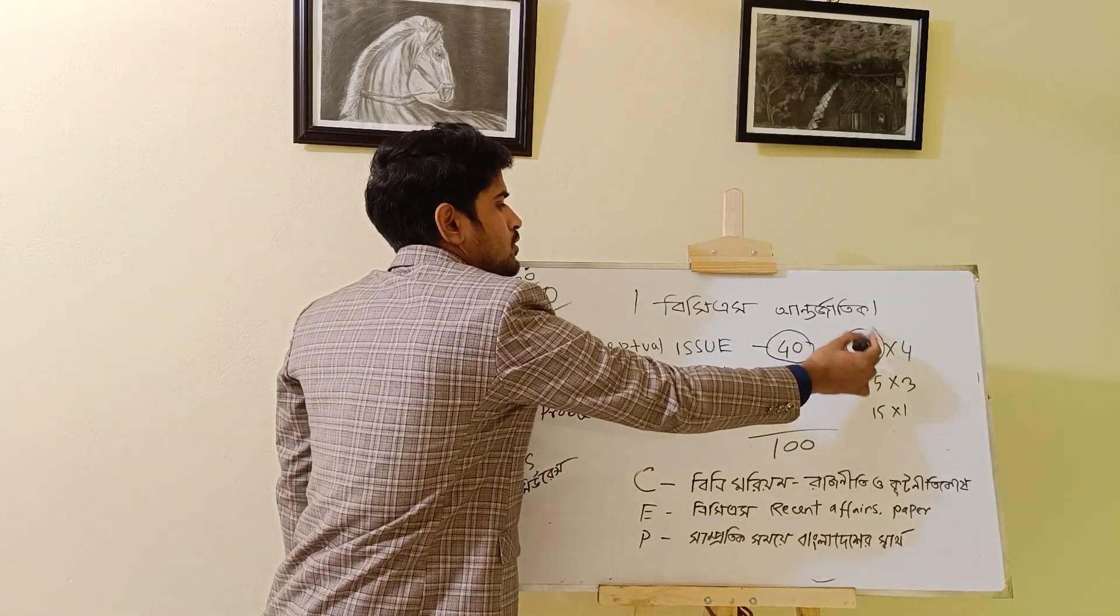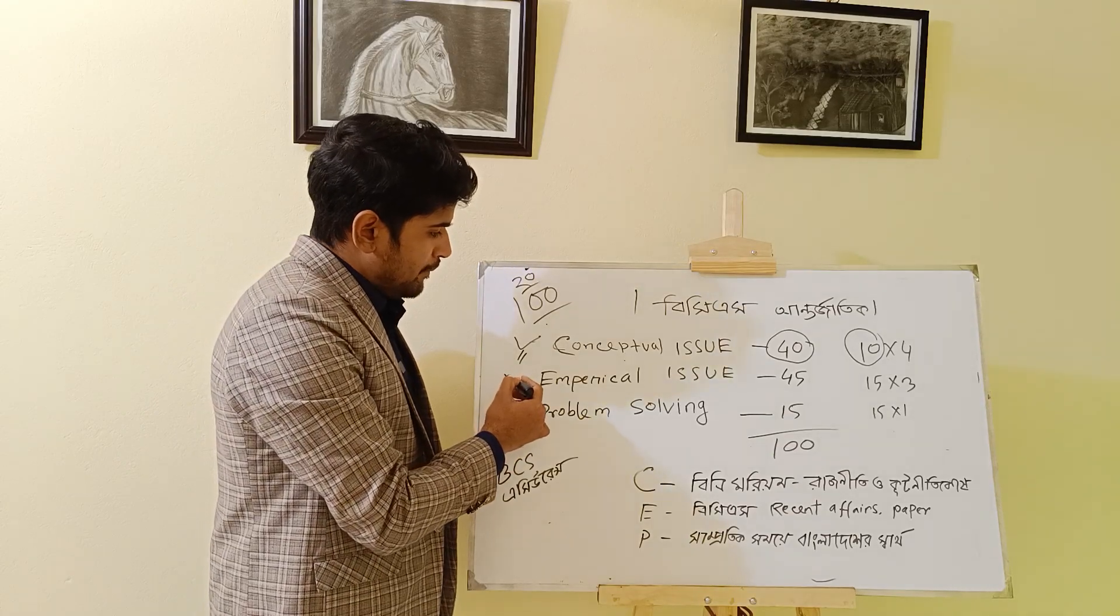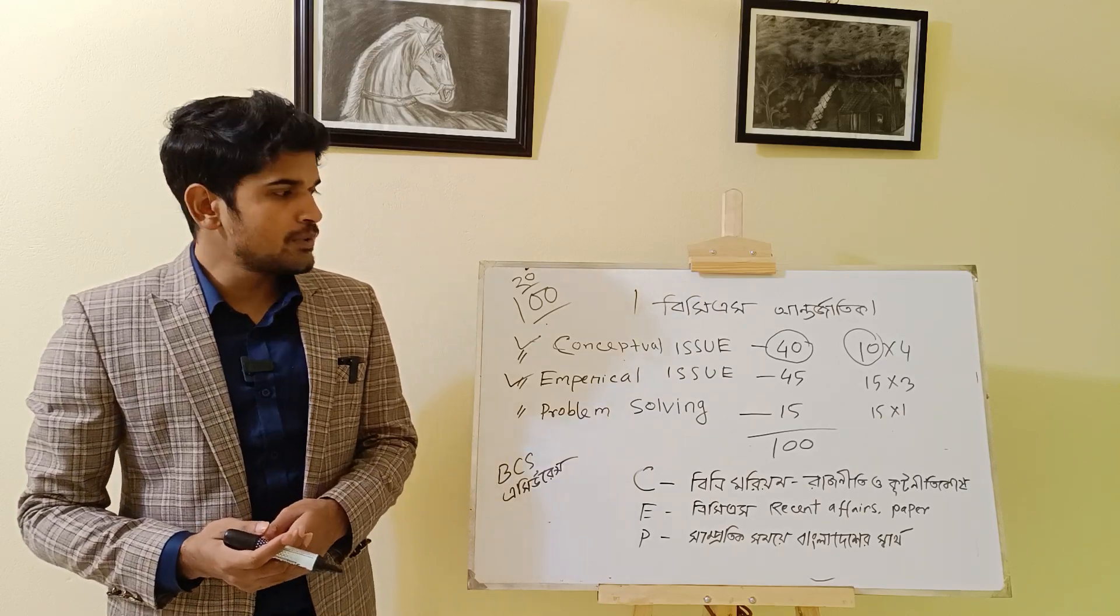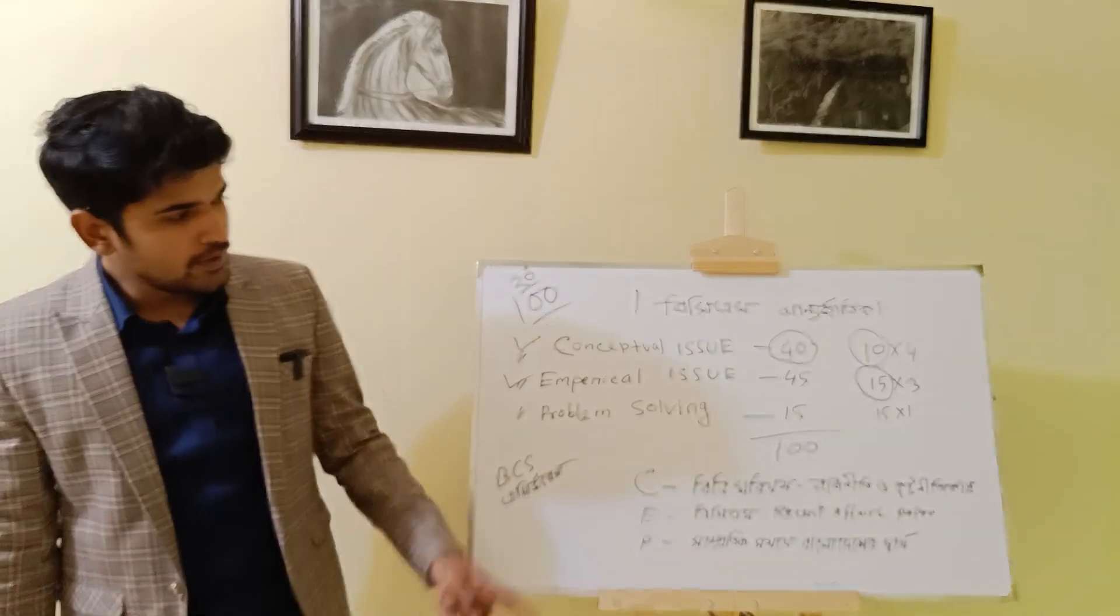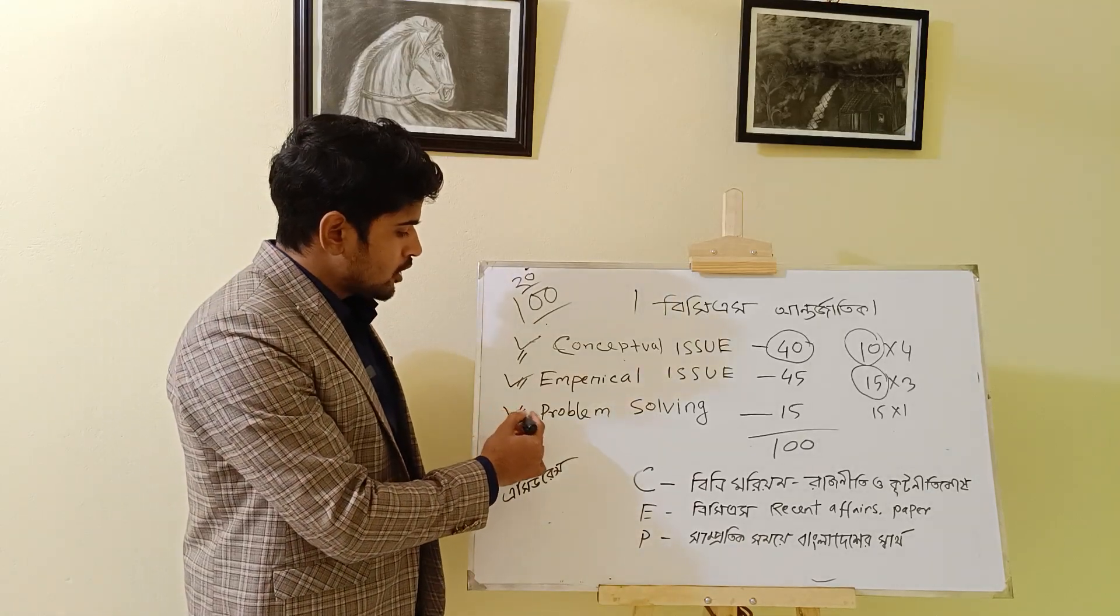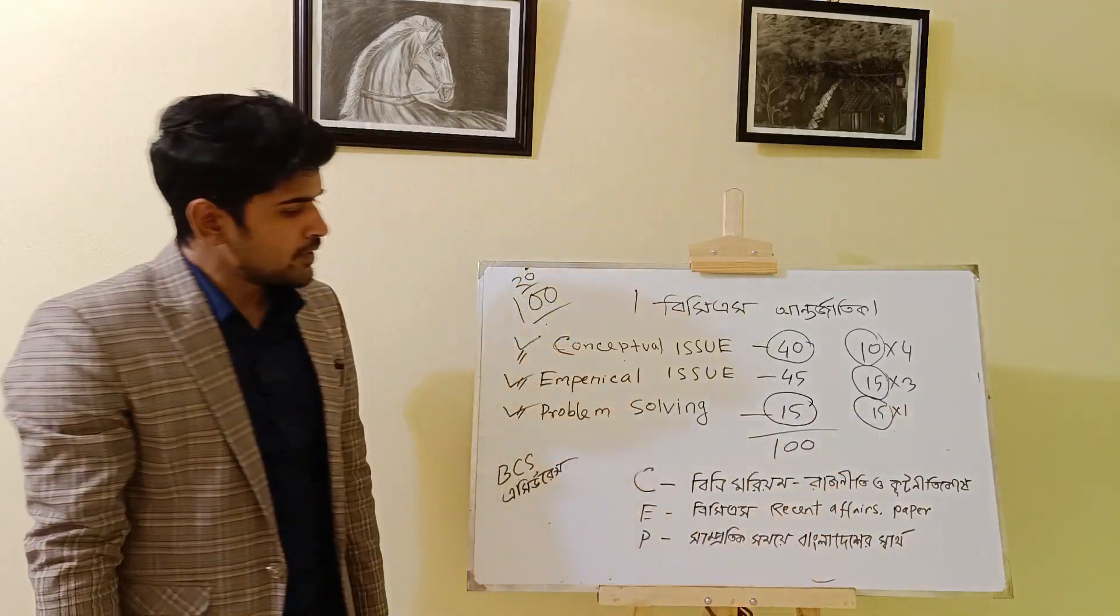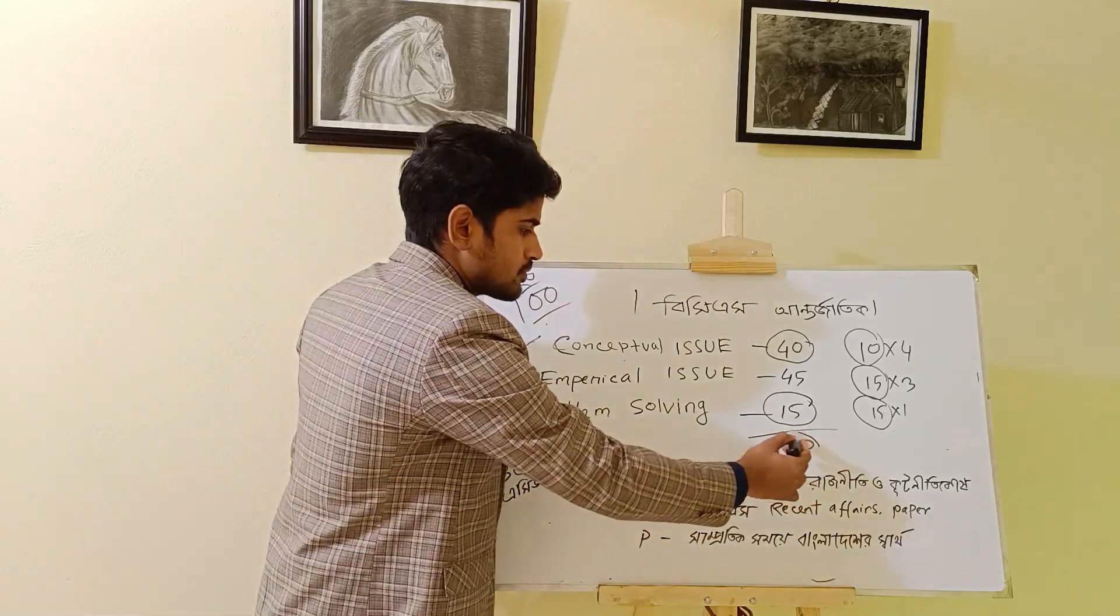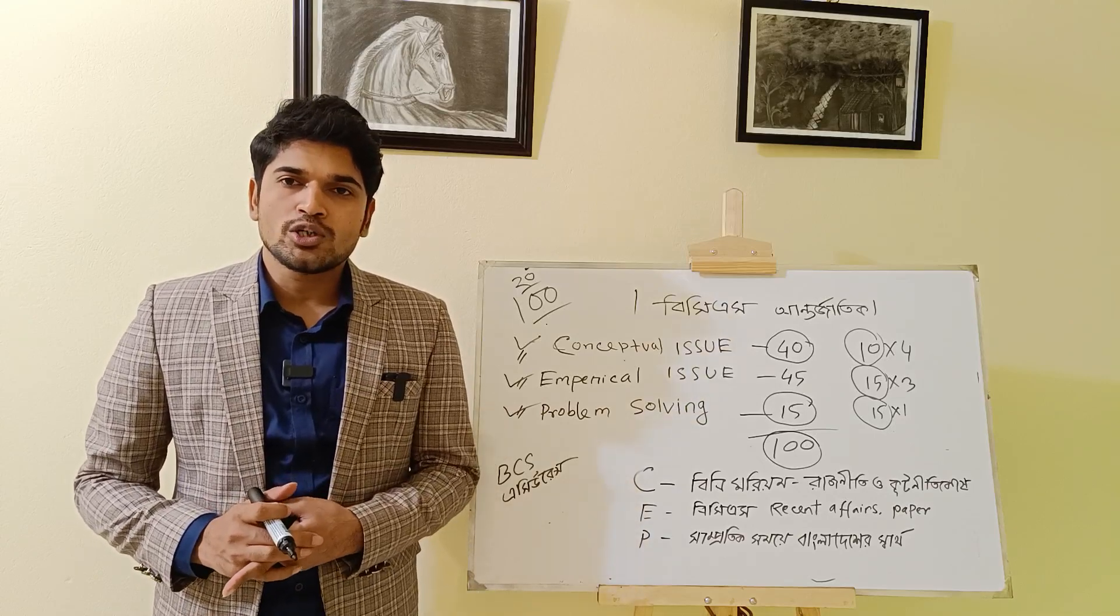The exam has a particular mark distribution: empirical issues are 45 marks total, and problem solving is 15 marks. So together it's 100 marks total. The conceptual issue covers international relations concepts.